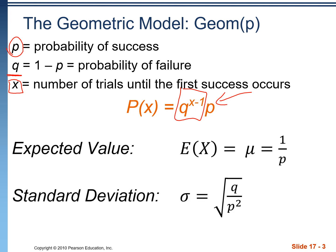We can find an expected value, a mean, by taking one and dividing by the probability of success, and standard deviation is given by this equation here.